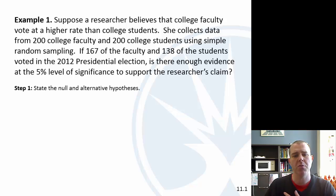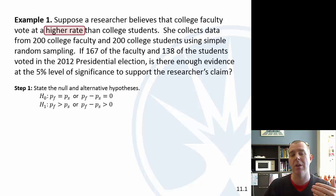Let's go through the steps. First, state the null and alternative hypotheses. The null hypothesis is that they are equal. We were told that the researcher thought that faculty voted at a higher rate. So our alternative would be that the proportion of faculty who vote is higher than the proportion of students. Or if you subtract them, you get a positive value.